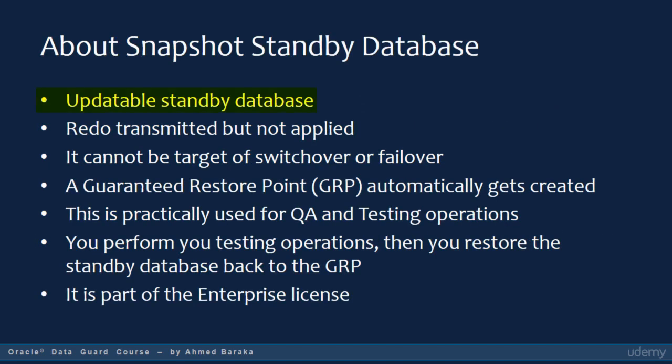A snapshot standby database is a physical standby database that is opened for read-write operations. Users can connect to the snapshot standby database and perform any read-write operations on it, as if they would be connecting to a normal database. While the standby database is opened for read-write operations, the redo will be transmitted from the primary database and received by the standby database.